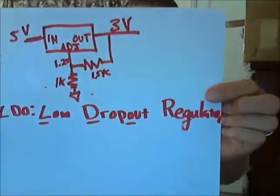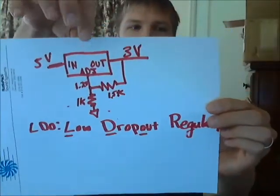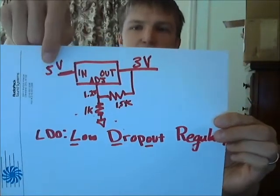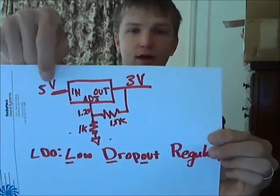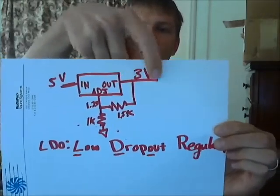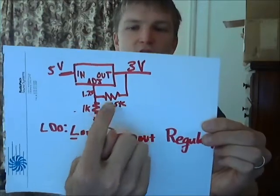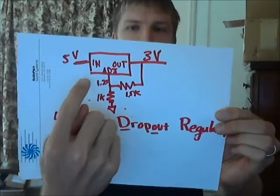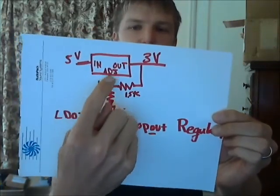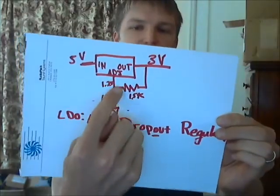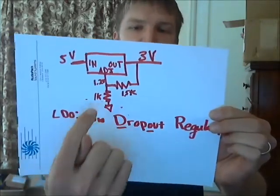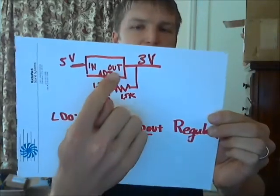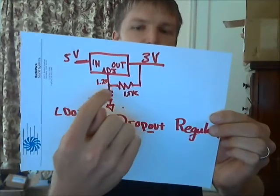Turns out somebody made that, and it's called a low dropout regulator. This is what the circuit diagram looks like. It gets its 5 volts in and puts out a voltage that's almost as much as 5 volts or lower. It will give you whatever voltage you program with two resistors. You set up a voltage divider, and the LDO does what it takes to make the adjust pin - that third pin - equal 1.2 volts, or whatever that adjust pin happens to want to be, which you can look up on the datasheet.